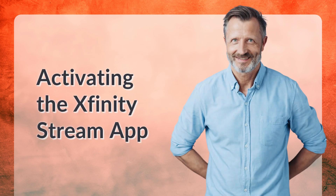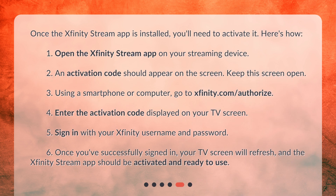Activating the Xfinity Stream app: Once the Xfinity Stream app is installed, you'll need to activate it. Here's how: 1. Open the Xfinity Stream app on your streaming device. 2. An activation code should appear on the screen — keep this screen open. 3. Using a smartphone or computer, go to xfinity.com/authorize. 4. Enter the activation code displayed on your TV screen. 5. Sign in with your Xfinity username and password. 6. Once you've successfully signed in, your TV screen will refresh, and the Xfinity Stream app should be activated and ready to use.